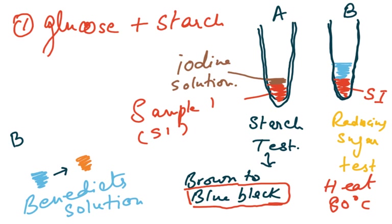Observe the color change. Because the solution contains glucose, it will turn from blue to orange, brick red, or another color — it will not remain blue. These two tests confirm it is sample 1. The protein test and fat test would both be negative for this sample.